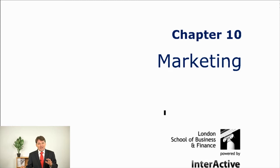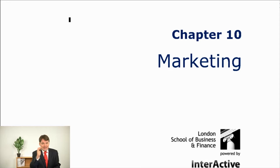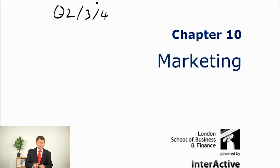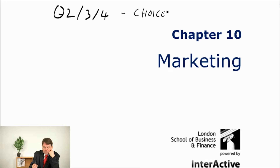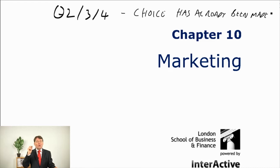In the exam you will probably get questions on strategic implementation — normally questions 2, 3, or 4. The reason is that in those questions the strategic choice has already been made. They've done PESOL, Five Forces, Value Chain, Mendeleau, Ansof, SFA — they've chosen something and it's not working well because they're not implementing it properly.